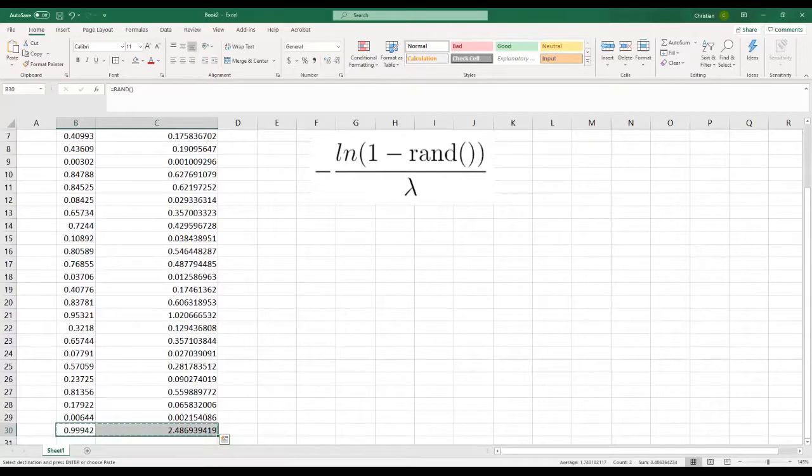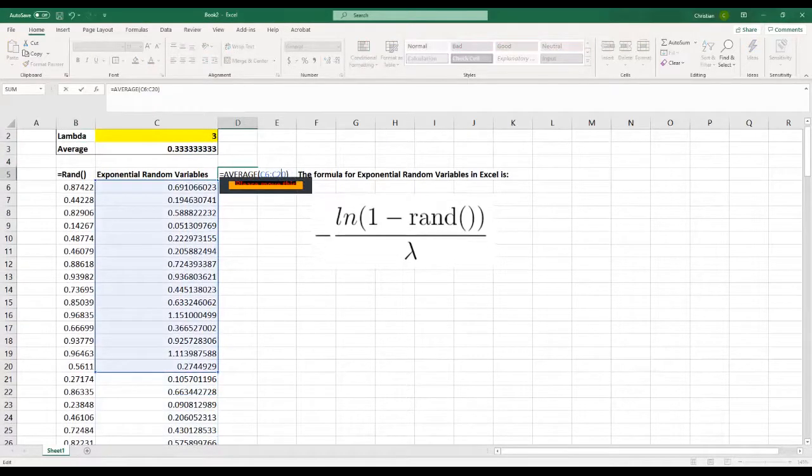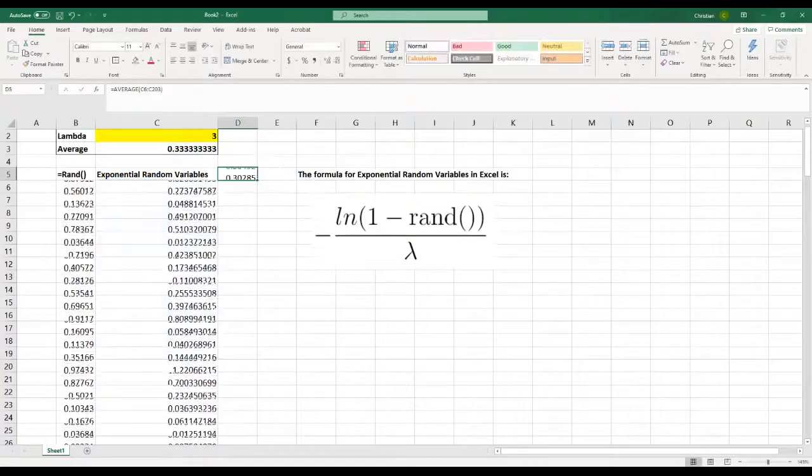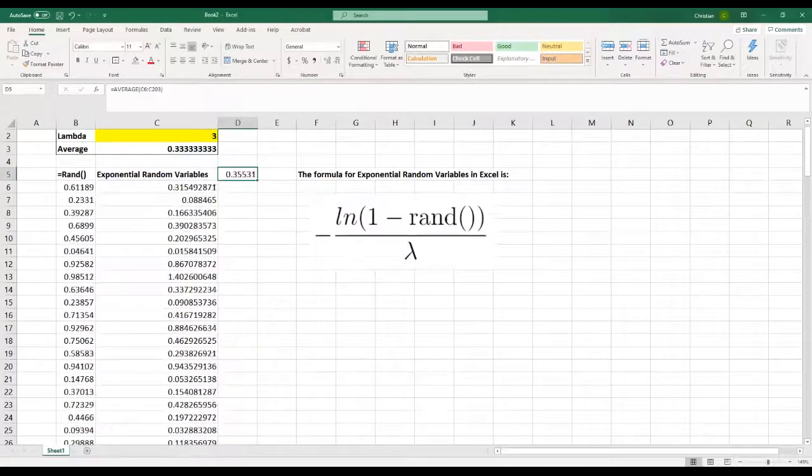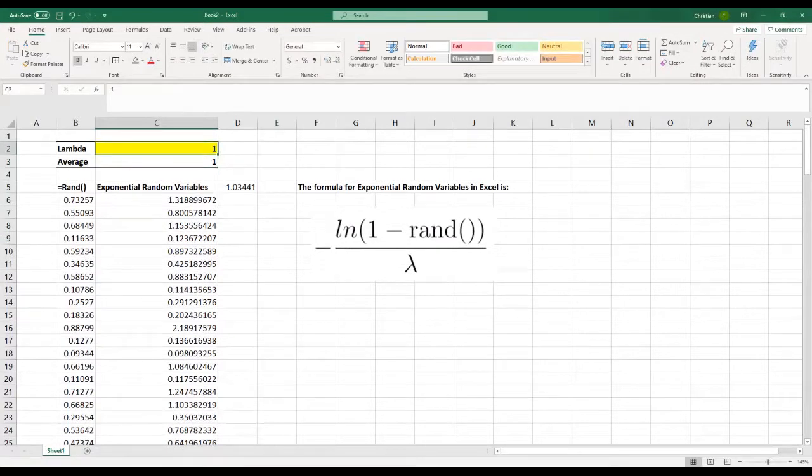And then if you just get a couple more random variables, you should see that you're continuously pretty close to the average here if you play around with it. That's how you do it.